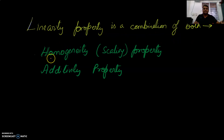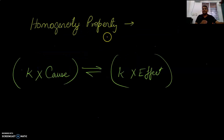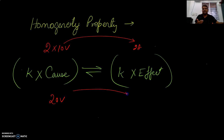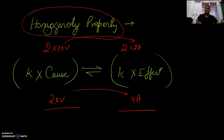Linear property is a combination of both: one is homogeneity, the scaling property, and another is the additive property. Homogeneity property means if you multiply something — like if 10 volts gives an effect of 2 amperes of current, and you multiply by 2 to give 20 volts — the effect should be 4 amperes. If this is the case, that doubling the voltage doubles the current, this is called the homogeneity property.